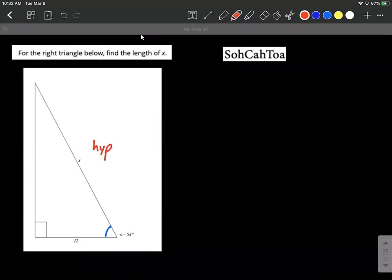This is going to be our hypotenuse because it's opposite where the right angle is located, and the 12 is going to be an adjacent side to the angle 53 degrees.